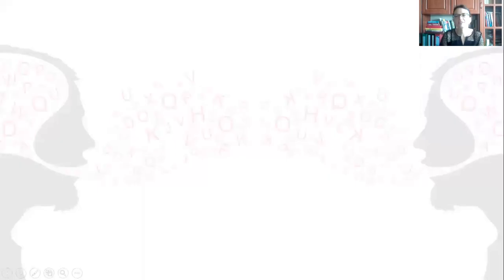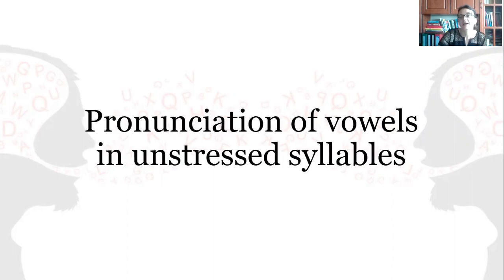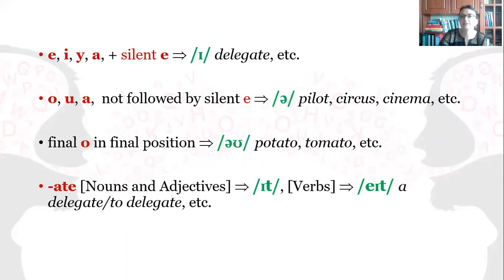Now, are there any rules that might help us pronounce the vowels in unstressed syllables correctly? Yes, there are a few, and probably you already know that quite a lot of vowels in unstressed syllables are reduced to schwa, yet not all of them. So let's see the regularities. For example,